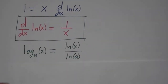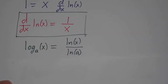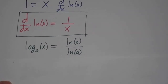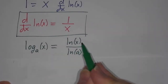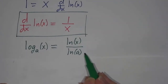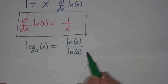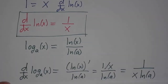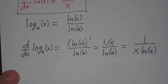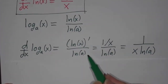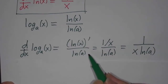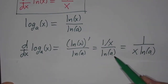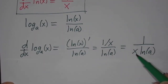Now what about log base a? Log base a really isn't a different function. By our fifth law of logarithms, it's the natural log of x divided by the natural log of a — just the natural log of x divided by a constant. So its derivative is the derivative of the natural log of x divided by the constant, which is 1 over x divided by the constant. So it's 1 over x times the natural log of a.